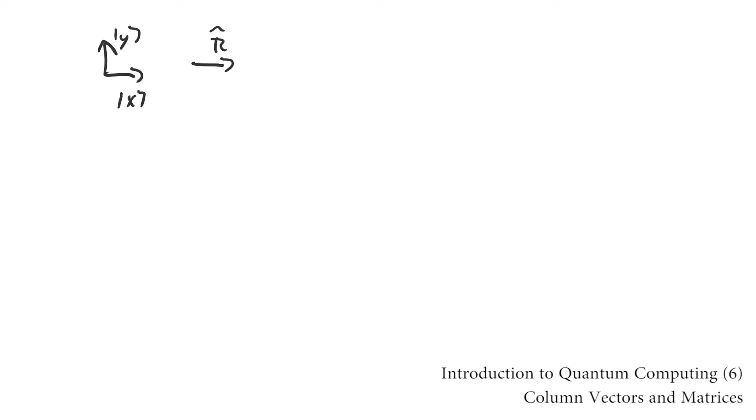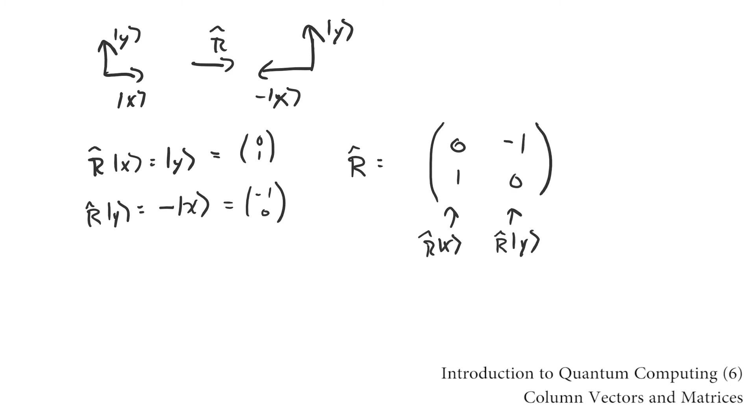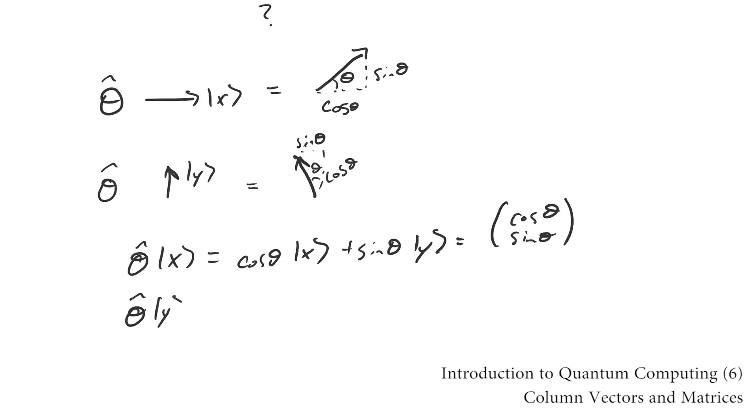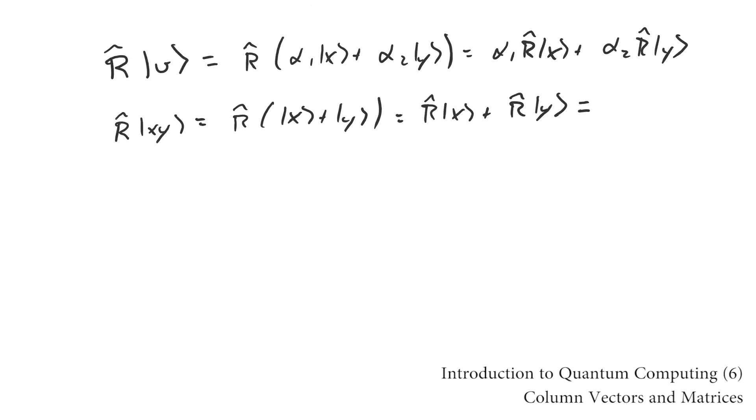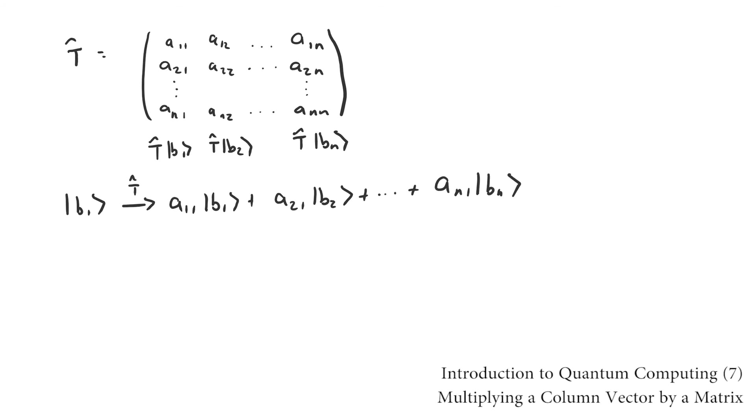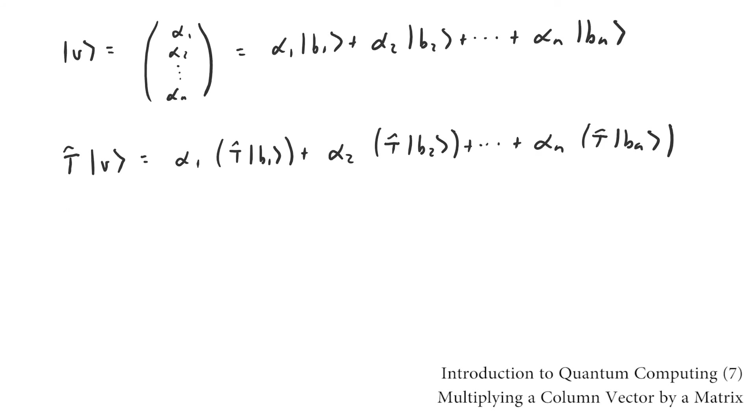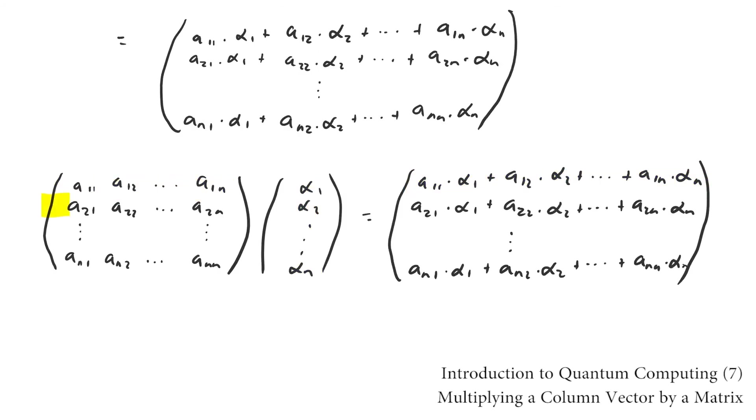Similarly, linear transformations can be concisely represented by taking the column vectors that correspond to the vectors that some basis vectors are transformed into and lining them up side by side in a matrix. Applying a linear transformation to a vector maps to multiplying a column vector by a matrix. And that's where the weird rules for carrying out this multiplication come from.